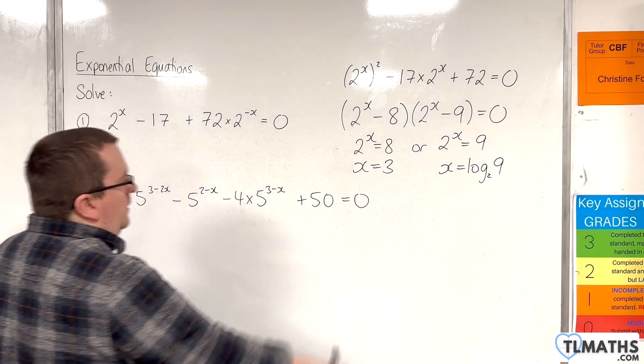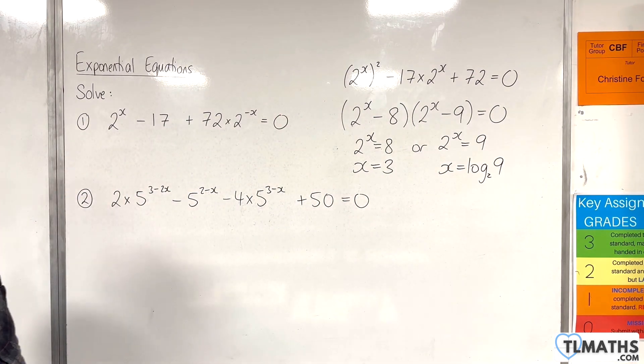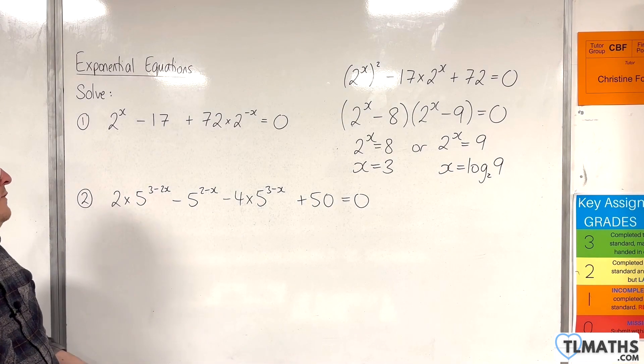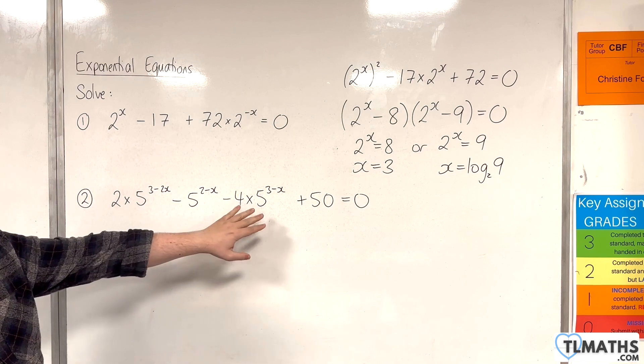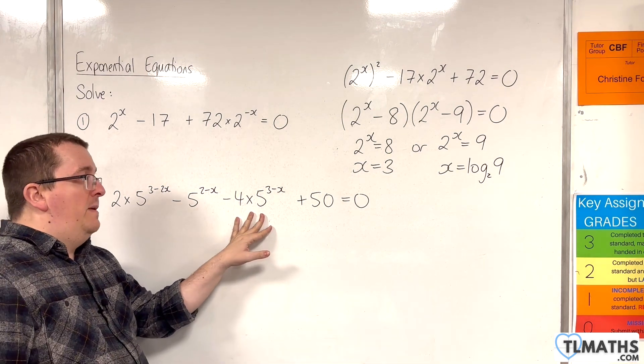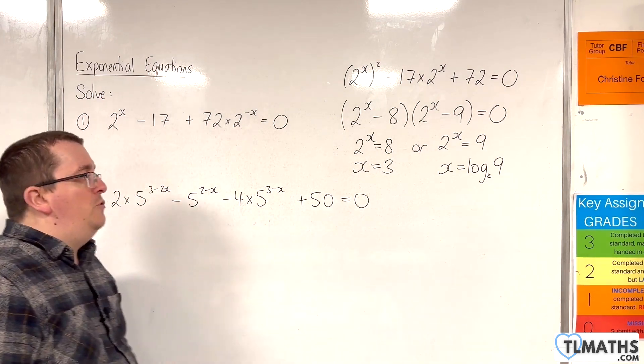Now, this one looks very nasty indeed. We've got 2·5^(3-2x) - 5^(2-x) - 4·5^(3-x) + 50 = 0.